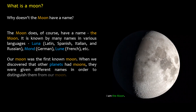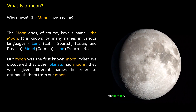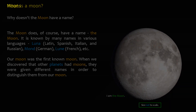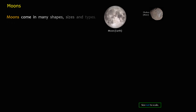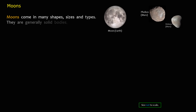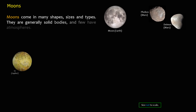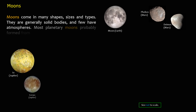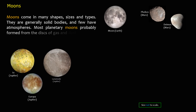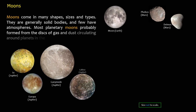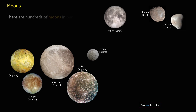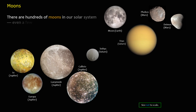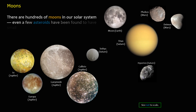Moons come in many shapes, sizes, and types. They are generally solid bodies, and few have atmospheres. Most planetary moons probably formed from the disks of gas and dust circulating around planets in the early solar system. There are hundreds of moons in our solar system. Even a few asteroids have been found to have small companion moons.